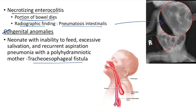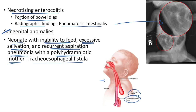Tracheoesophageal fistula: neonate presents with inability to feed, excessive salivation, and recurrent aspiration pneumonia with a polyhydramniotic mother. The most common type has the esophagus ending in a blind pouch with a distal tracheoesophageal fistula.